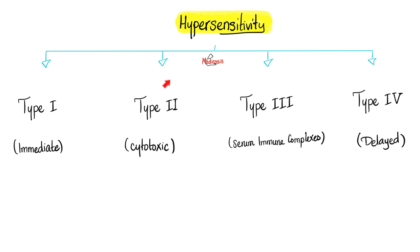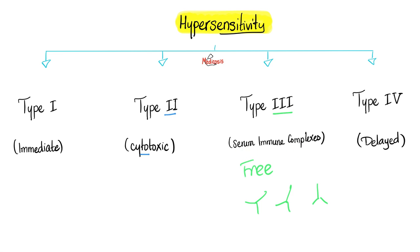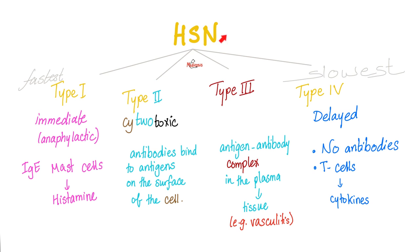Hypersensitivity type 1, type 2, type 3, type 4. Type 1 is immediate, but type 4 is delayed. Type 2 is cytotoxic. And type 3 — you have free antibodies. What do you mean by free? The antibodies are floating in the plasma; they are floating in your blood. They are not bound to cells. You can describe type 3 by three words: serum immune complexes.